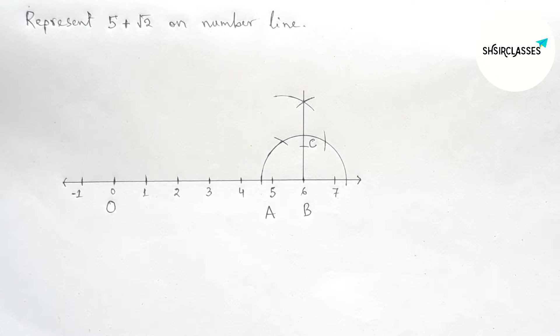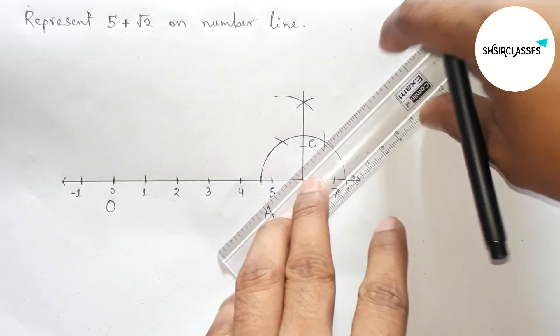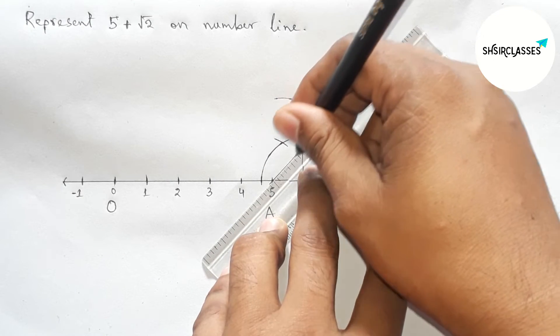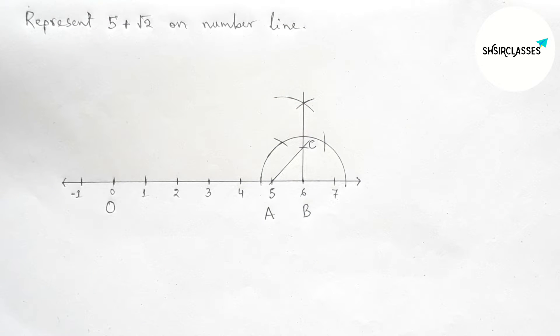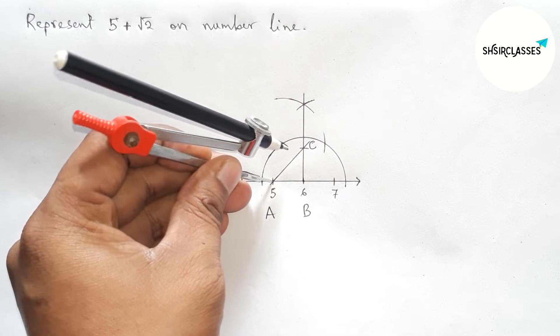Next joining B and C, and this is representing root 2. Now taking AC with the help of compass by this way.